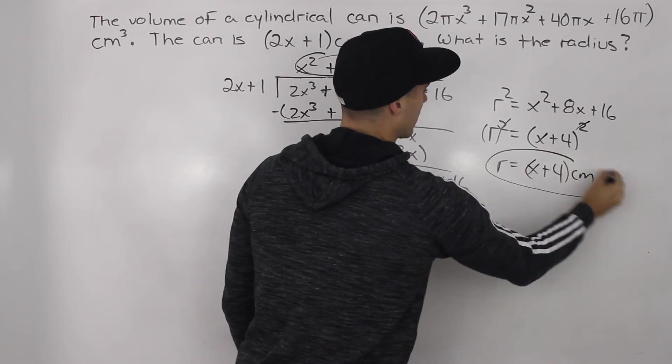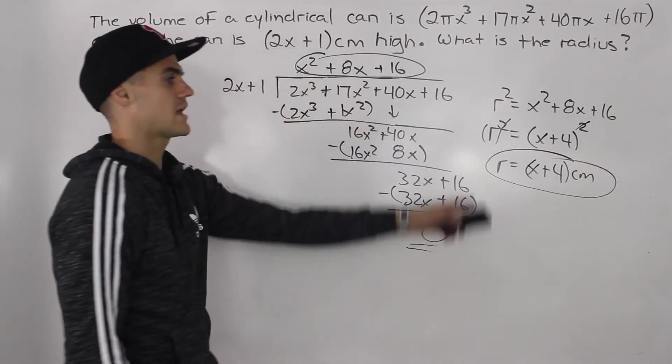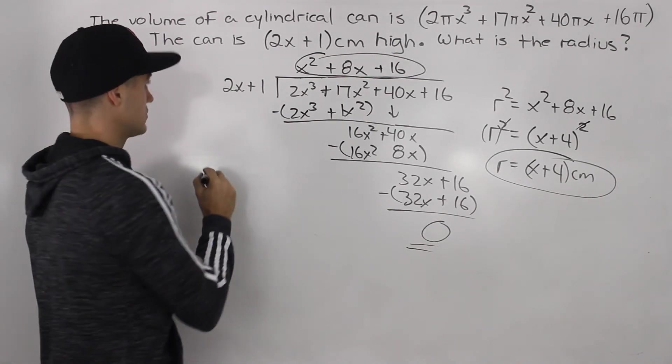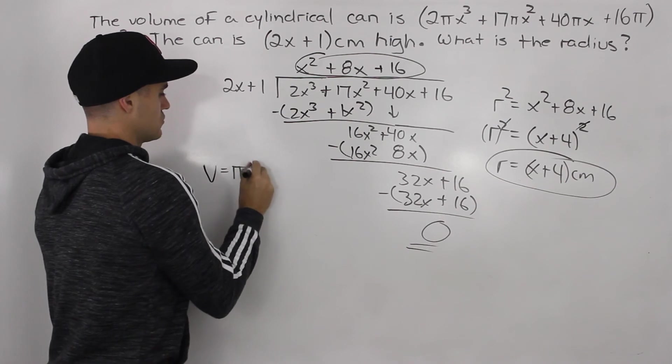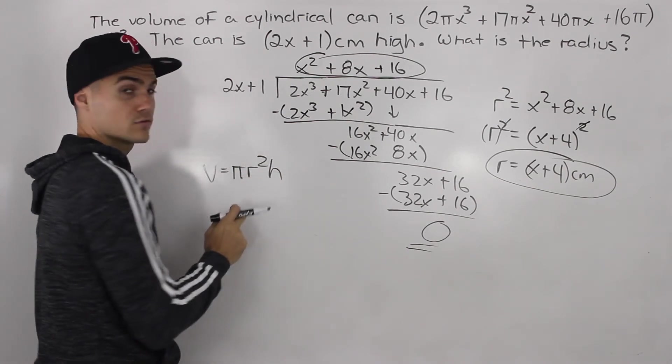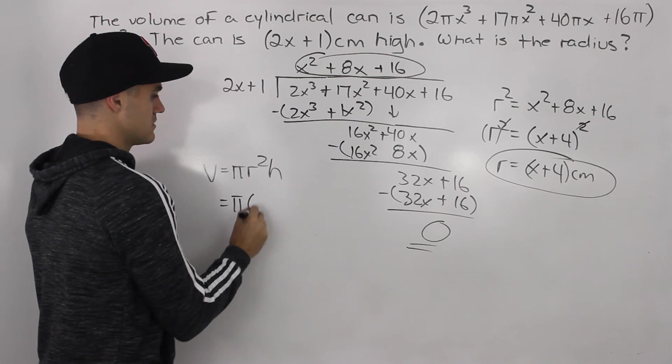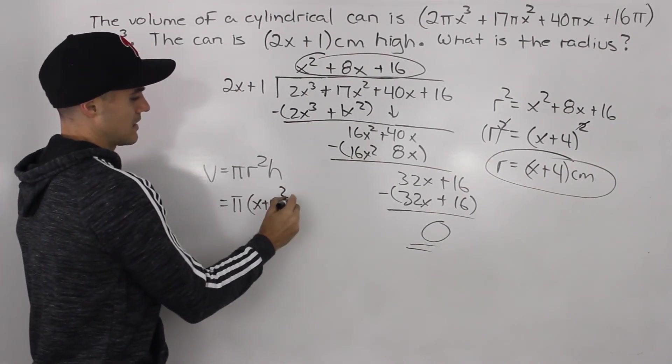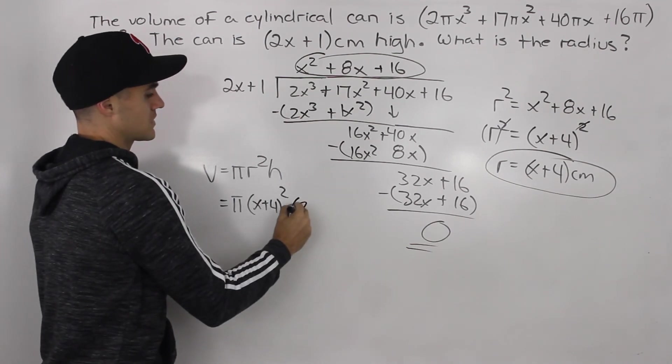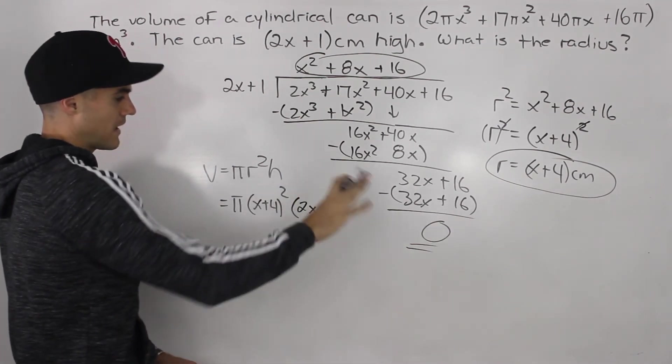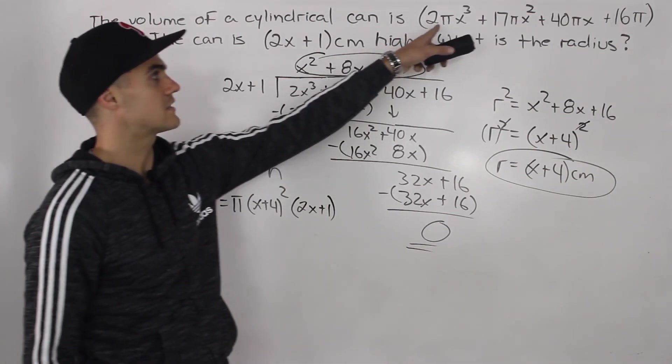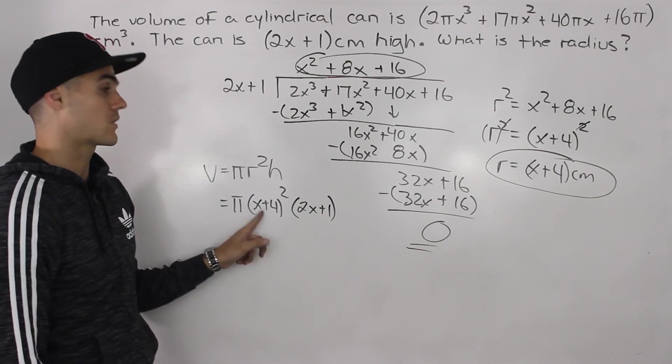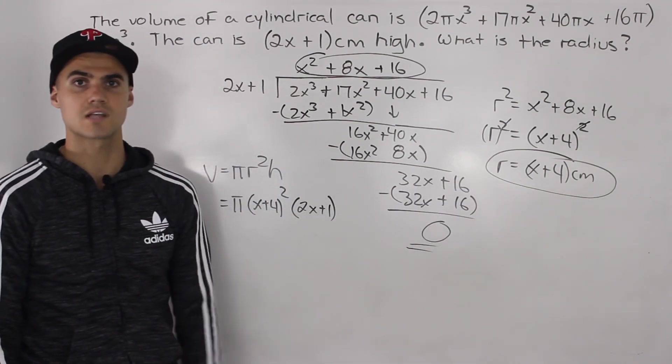That is your final answer. The radius is x + 4 centimeters. If you really want to check your answer, you can go back to our volume formula for a cylinder and plug everything in. We got π, our r is (x + 4) and that's going to be squared, and then the h is 2x + 1. You can expand all this and make sure that you get that same volume, which you should get. The radius is x + 4 centimeters.